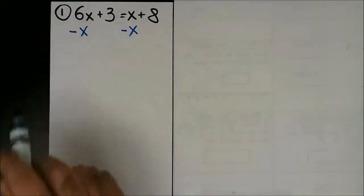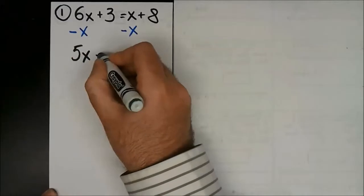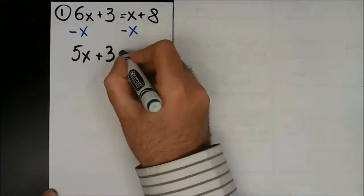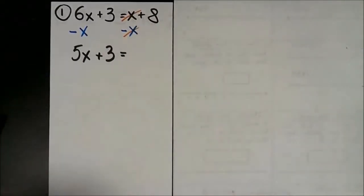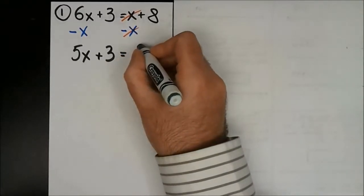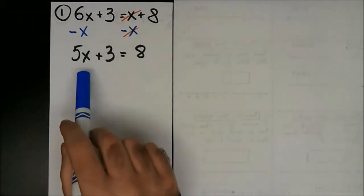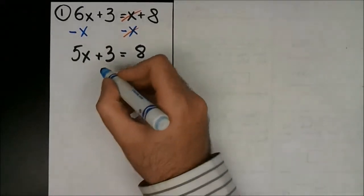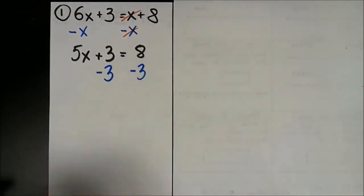When I do this, 6x minus x is 5x. The 3 carries over. x minus x cancels out, so they're gone — all that's left is a positive 8. Now this is just like any other two-step equation. I'm going to isolate this x — I'm going to get rid of the plus 3 first by doing a minus 3 to both sides, of course.